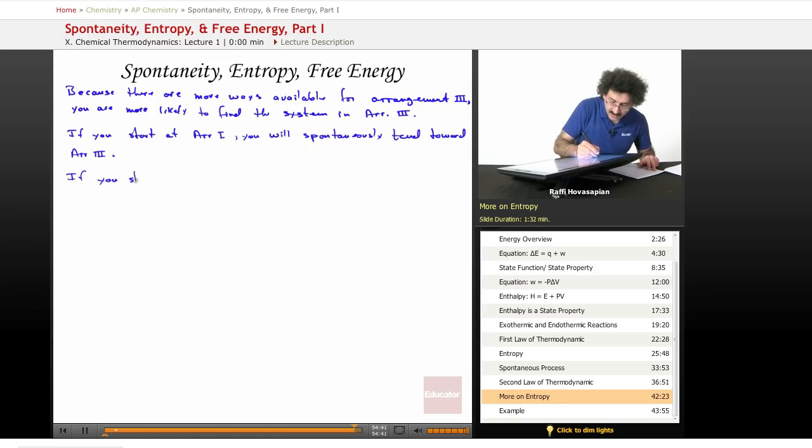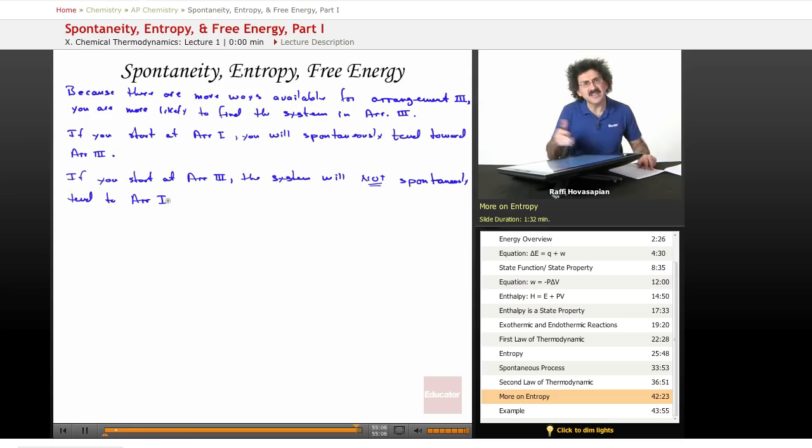If you start at state three, if you start at arrangement three, the system will not spontaneously go, will not spontaneously tend to arrangement one. Because there's going to be a decrease in entropy. It's not going to happen. It's just not going to happen. Ever.